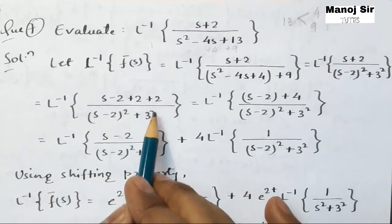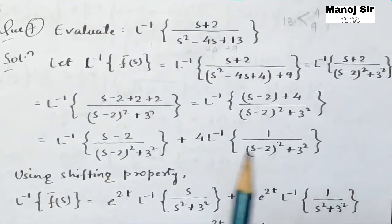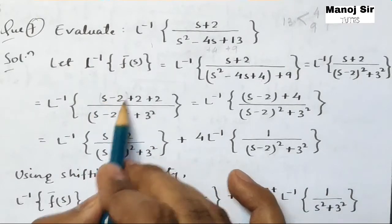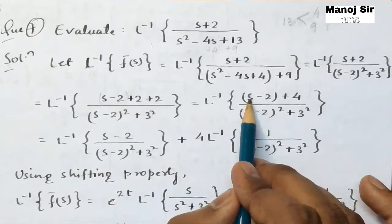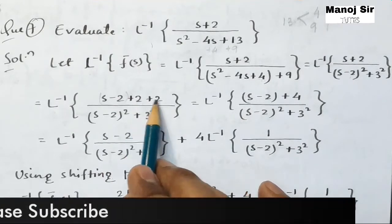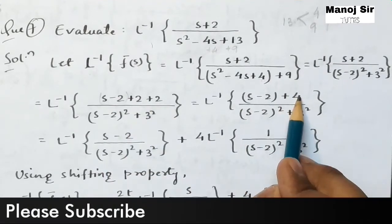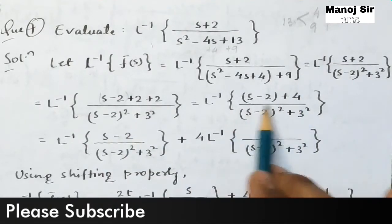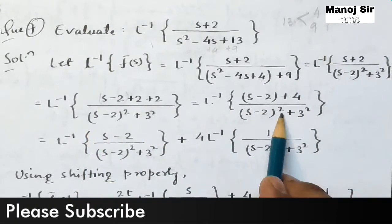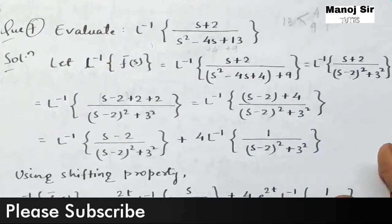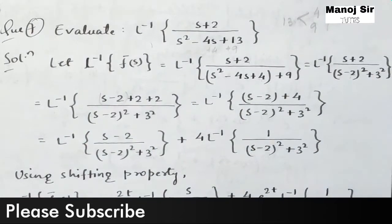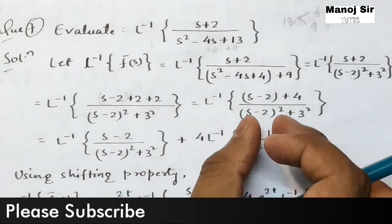The extra +2 comes from the original +2 in the numerator. So upon the denominator (s − 2)² + 3², we put a bracket for (s − 2 + 4) — that is, (s − 2) + 4 — upon (s − 2)² + 3², with no change in the denominator part.